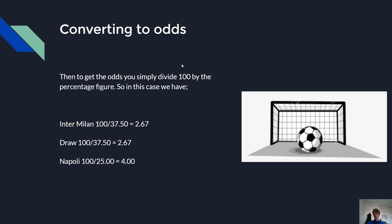The next step is to convert those percentages to odds. To do that you simply divide 100 by the percentage figure. So for Inter Milan, 100 divided by 37.5 gives us 2.67, the exact same odds for the draw, and for Napoli 100 divided by 25 gives us 4.0.